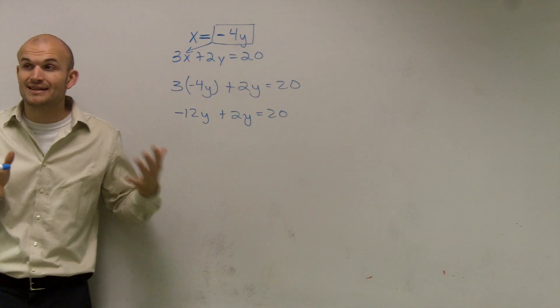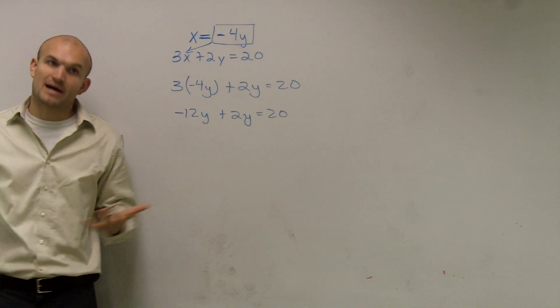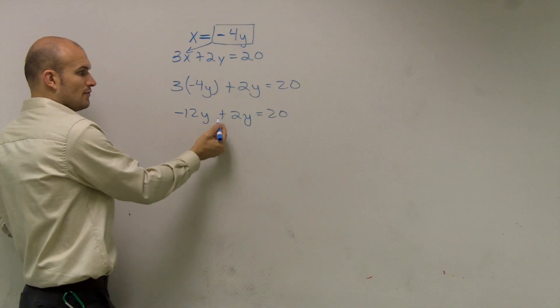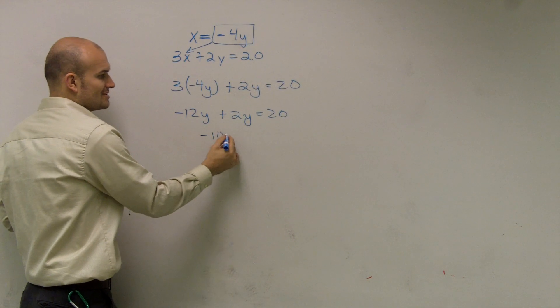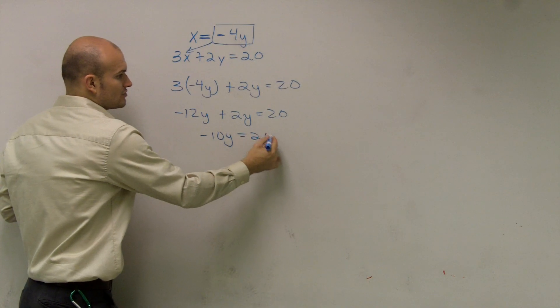Now, ladies and gentlemen, when you have a variable on the same side, we combine like terms. Negative 12y plus 2y is a negative 10y equals 20.